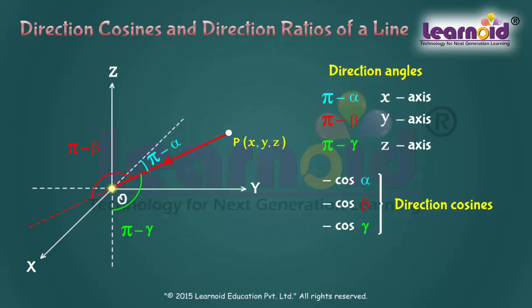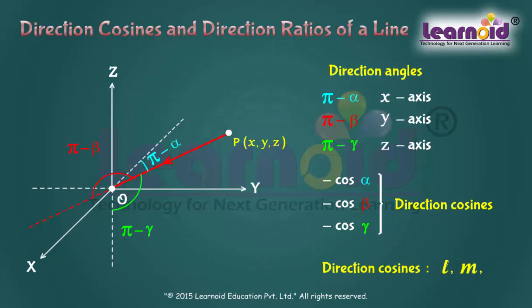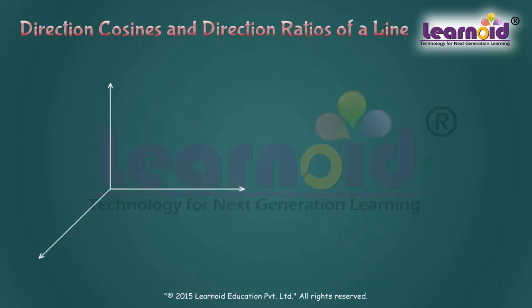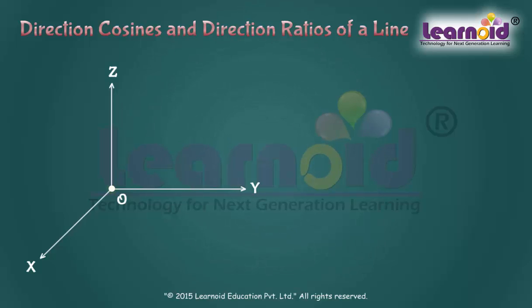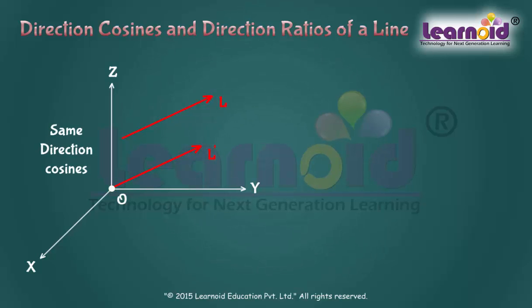To have a unique Direction Cosine of a given line, it must be a directed line. If a line is not passing through the origin, then to find the Direction Cosines, we draw a line through the origin and parallel to the given line. The two parallel lines have the same set of Direction Cosines.